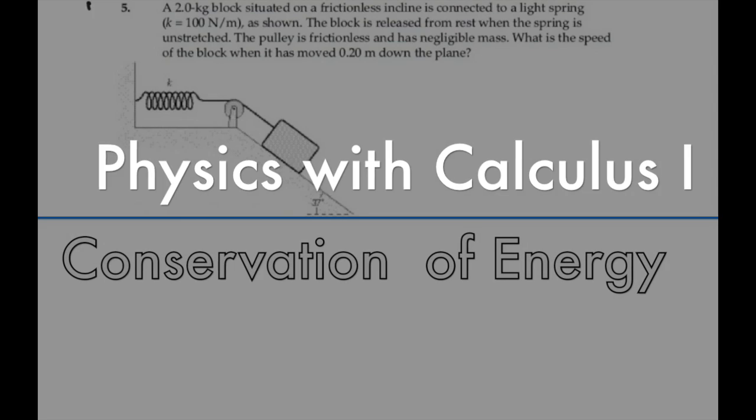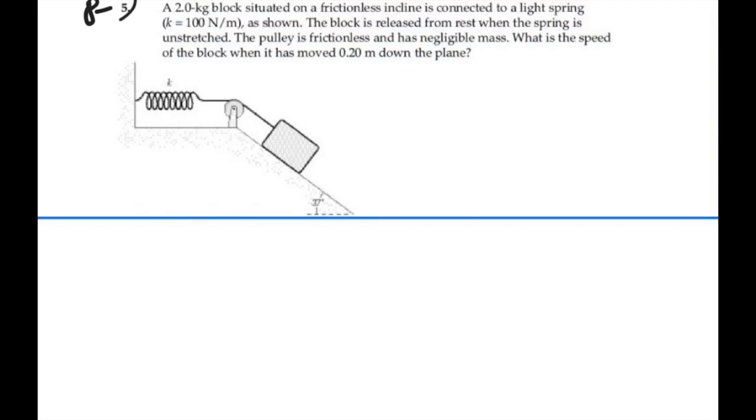Here's problem 8.5. A 2 kg block situated on a frictionless incline is connected to a light spring, spring constant 100 N/m as shown. The block is released from rest when the spring is unstretched. The pulley is frictionless and has negligible mass. What is the speed of the block when it has moved 0.2 meters down the plane?